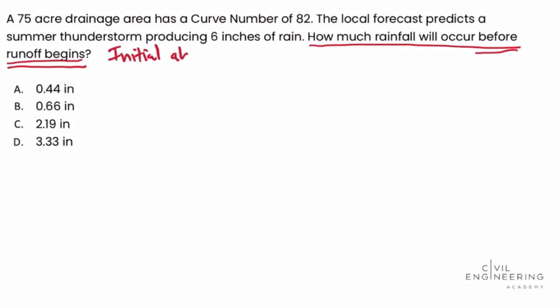Let's talk about what the initial abstraction is for a minute. When rain begins to fall from the sky, some of it will be evaporated. Some of it will be intercepted and land on tree canopy, leaves, vegetation, and things like that.